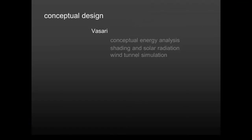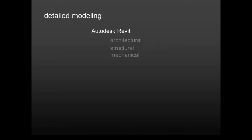Once you've looked at things in Vasari and have a basic idea of your conceptual design, you probably want to move into more detailed modeling. When it comes to detailed modeling, probably the best tool in the suite is Autodesk Revit. There are tools in Revit for modeling architectural features, structural features, and mechanical features. Let me take you on a quick tour of what Revit looks like.